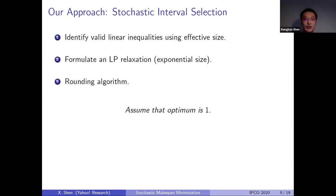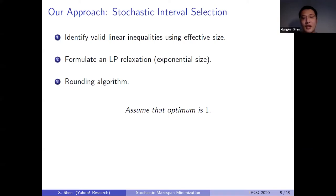Here is an outline of our algorithm. We will first find linear inequalities based on effective size, then formulate our LP relaxation based on these valid inequalities. The LP has exponential size, so it can only be solved in polynomial time with an ellipsoid method and a separation oracle. Then we apply a rounding algorithm to reduce the fractional solution from the LP relaxation to a deterministic instance and call the deterministic algorithm. In the remaining part of this talk, I will assume the optimal objective value is one after normalization, which can be achieved by a standard binary search procedure.